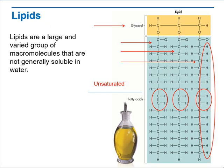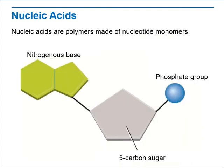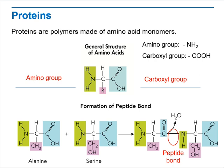Moving to lipids: lipids are a large and varied group of macromolecules that are not generally soluble in water. Moving to nucleic acids, which are polymers made of nucleotide monomers — we have a phosphate group, a nitrogenous base, and a 5-carbon sugar. Proteins are polymers made of amino acid monomers, with an amino group and a carboxyl group. We will discuss these and much more during the week.